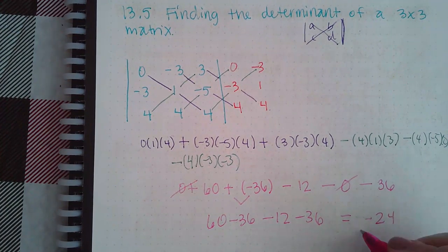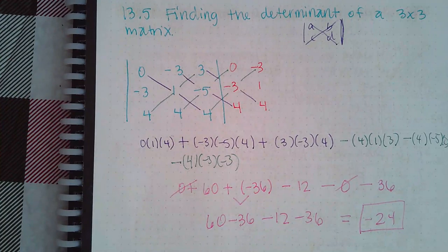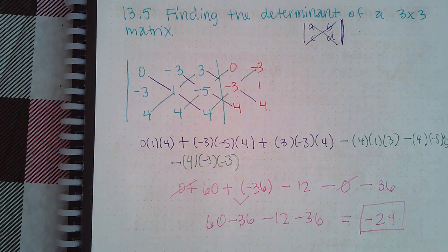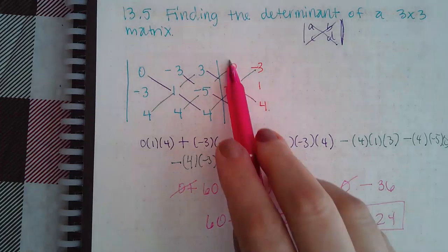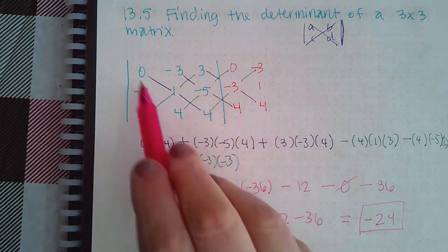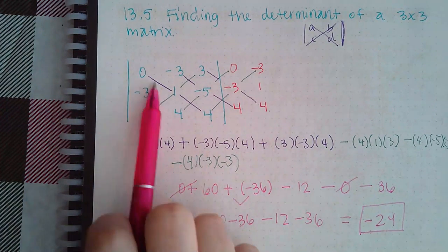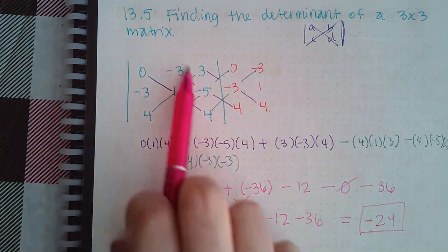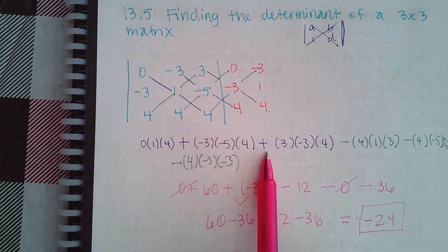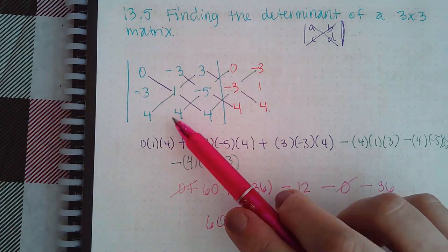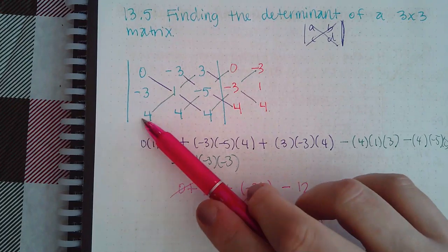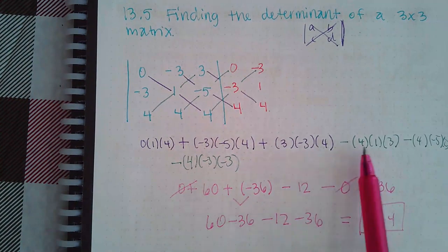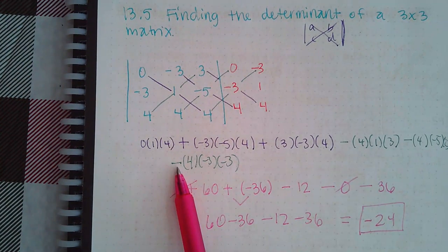Using a calculator, I end up with negative 24 as the determinant of this three by three matrix. To summarize: rewrite the first two columns to the right of the bar in the same order. Then identify your three downward diagonals — those going left to right downward get positive signs. Then identify your three upward diagonals — those going left to right upward get minus signs in front. Correct any double signs and complete your computations.